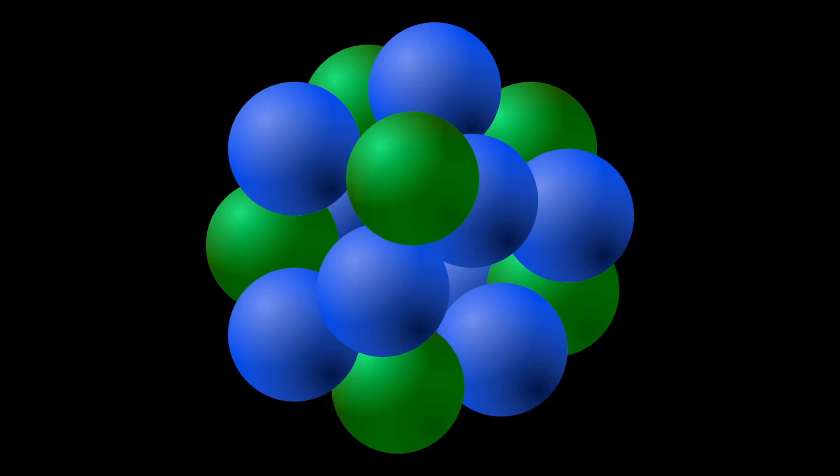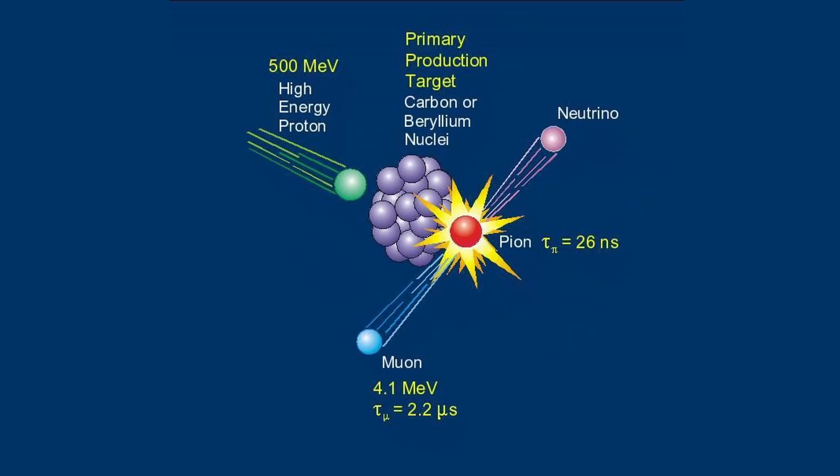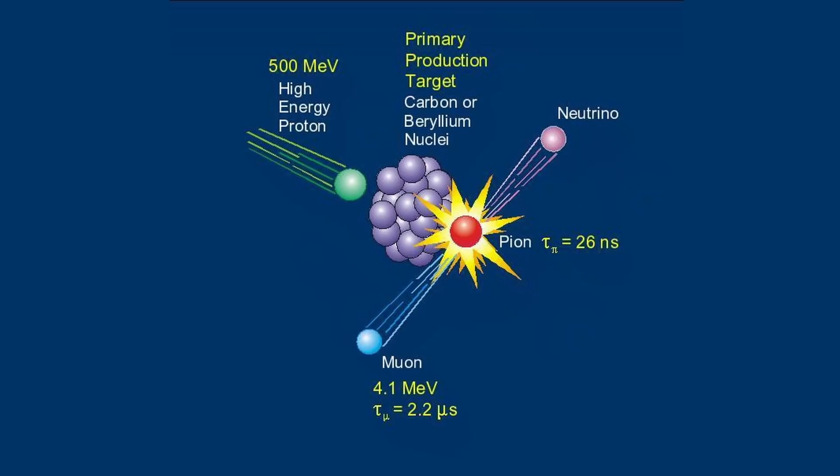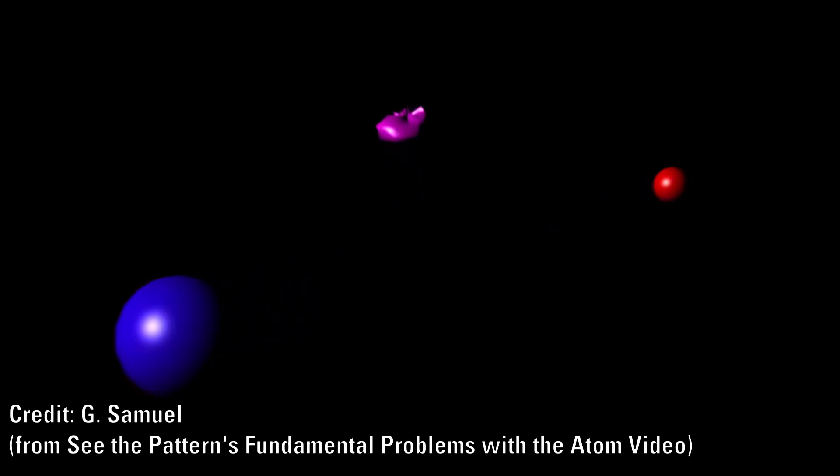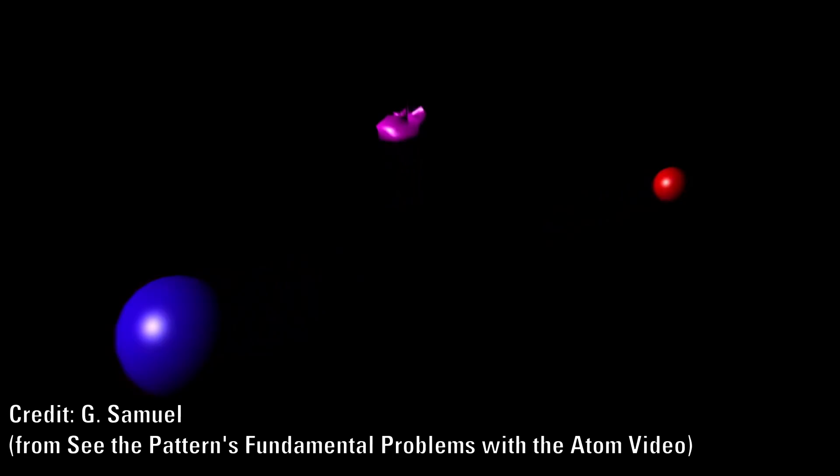In the mainstream model electrons do not exist within the nucleus. The muon is produced by colliding a particle with an atom. We know that a neutron decays into an electron and a proton and an antineutrino within about 15 minutes. Another clue comes from the fact that they are able to create muon atoms.